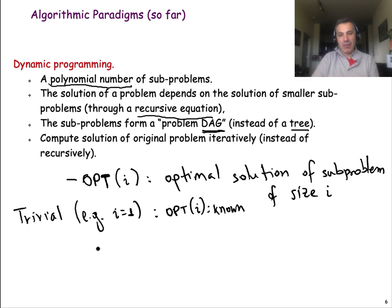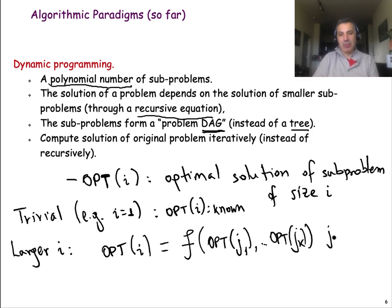For larger problem sizes, you can have a recursive equation that expresses the solution as some more complicated function here of solutions of problems that are of smaller sizes. So all of these sub-problems here, j1, all the way to jk, all of these are smaller than i. So this recursive equation, of course, is what we will spend most of our time trying to figure out. For each problem it's different. So let's try to show this visually.